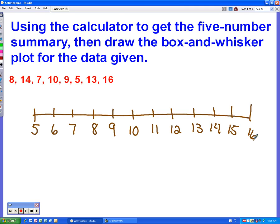Now, if you recall, the minimum was five. So what we're going to do now is draw a vertical line right above the five.